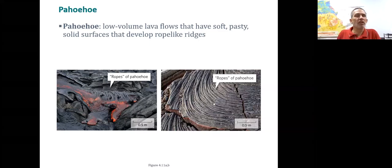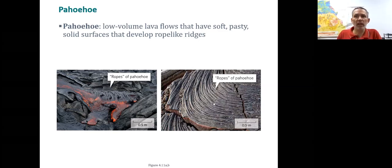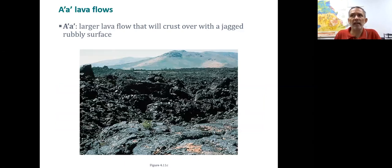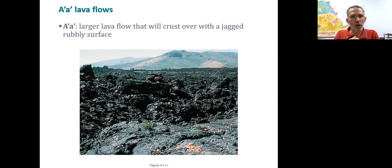If the silica content was a little bit higher, or the lava was a little bit cooler, or there were more gases, the lava would become more crumbly — we'd end up with a lava type called a'a. This is much more crumbly, jagged, rough material. Every geologist has to give the bad joke that a'a is the sound you make if you're stepping on it.